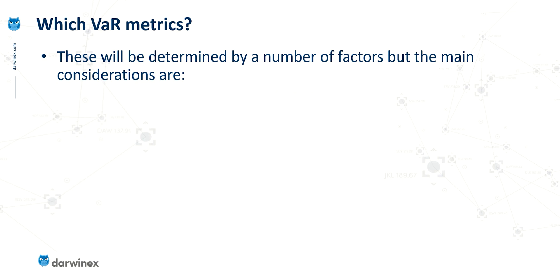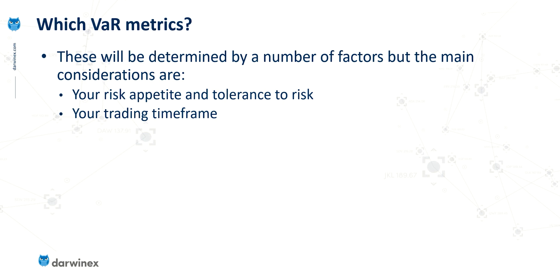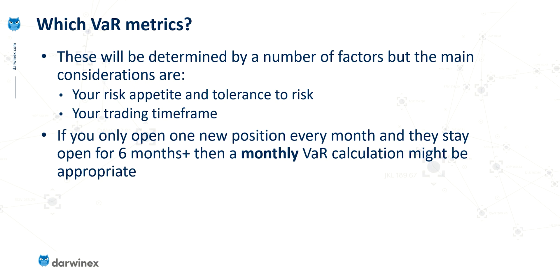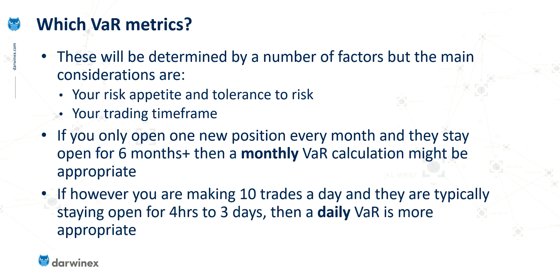With the method decided, we can now think about which metrics make most sense for us — and there will be different answers for different traders. In terms of defining risk tolerances and maximum risk levels, this will be very much dependent on your individual risk appetite. It will also be significantly impacted by your trading time frame. If you only open one new position each month and those positions typically stay open for six months or more, a monthly value at risk calculation like the one used by DarwinX might be most appropriate. However, if you have a much larger number of trades that stay open for hours up to a few days, then a daily value at risk is more appropriate.